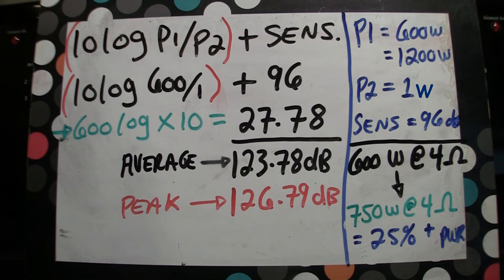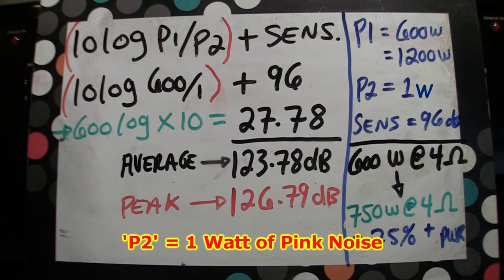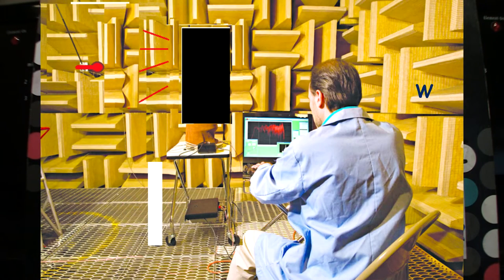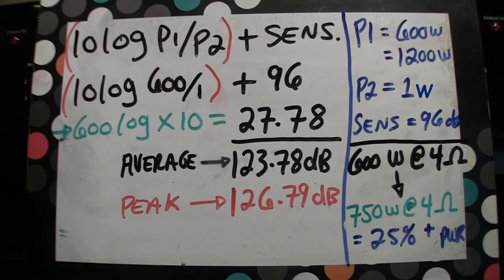They also give you the specifications for P2 or power 2, which is one watt of pink noise. Pink noise is sent through a speaker in an anechoic chamber at one meter away, so one watt at one meter, and then the testing is done to determine the sensitivity of the speaker in decibels. In this case, the speaker sensitivity is 96 decibels.